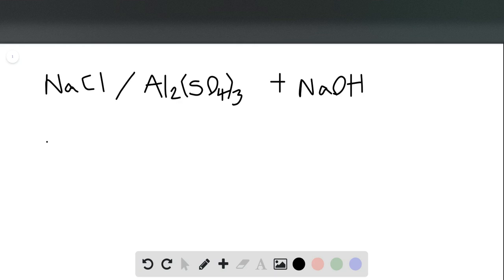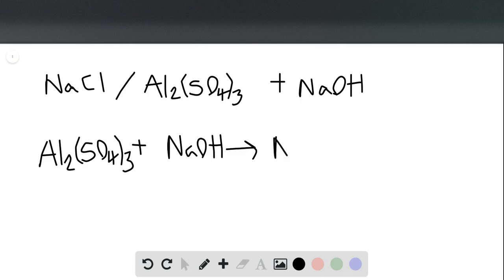So let's write out that reaction. We have Al2(SO4)3 plus sodium hydroxide NaOH, and that's going to form sodium sulfate. Remember, sulfate, this ion has a minus 2 charge overall, so we need two sodium cations in order to counter that. So we have Na2SO4, and then we have our aluminum hydroxide, Al(OH)3.